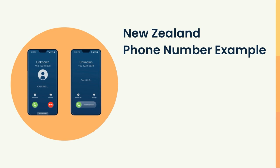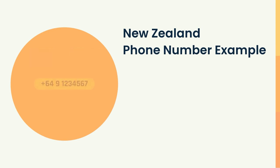To provide a clearer understanding, let's take a look at a New Zealand phone number example in the correct format. Suppose the New Zealand phone number is: +64-9-1234567.